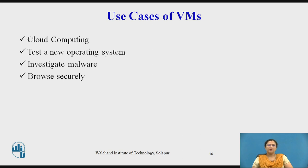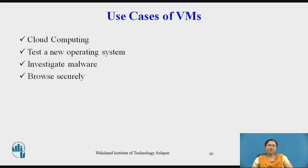Here are a few use cases of VMs. Cloud computing: virtual machines have been the fundamental unit of compute in the cloud, enabling dozens of different types of applications and workloads to run and scale successfully. Test a new operating system: a virtual machine lets you test drive a new OS on your desktop without affecting your primary OS. Investigate malware: VMs are useful for malware researchers who frequently need fresh machines to test malicious programs. Browse securely: using a virtual machine for browsing enables you to visit sites without worrying about infections, and you can take snapshots and roll back after each browsing session.